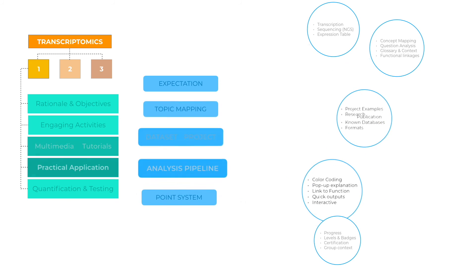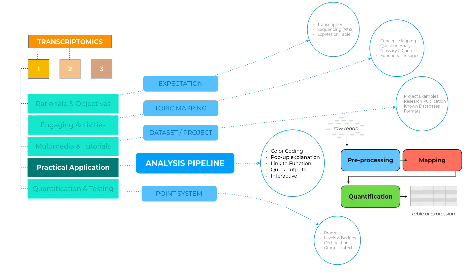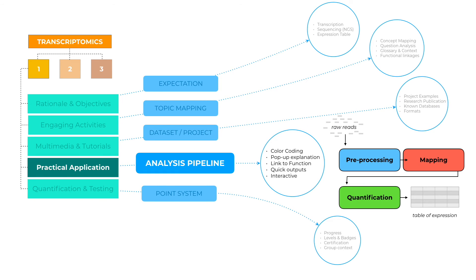To make these concepts practical, we offer students a way to gain practical experience and apply their knowledge to build analysis pipelines. Our platform is integrated into the learning process with the goal of using the same color coding to review in-depth explanations and link terminology to its function. These pipelines also require data input, so the students learn to find data from public domain databases such as NCBI, EMBL, or TCGA.